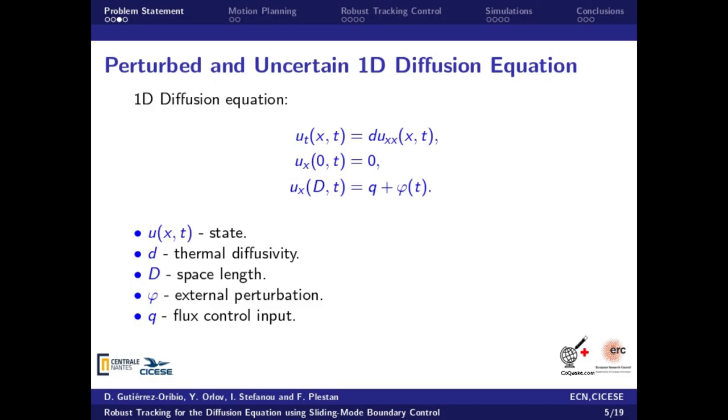This system has only Neumann boundary conditions. At x equal to 0, the flux is 0, and at x equal to D, the flux control input Q and the external perturbation bar phi are located.